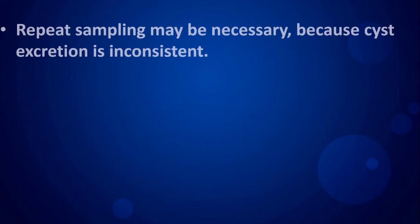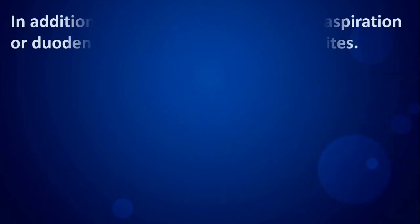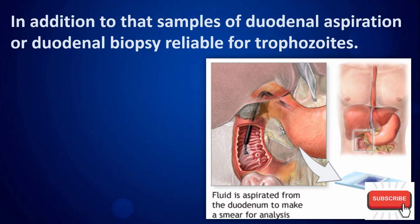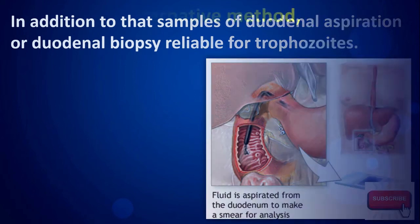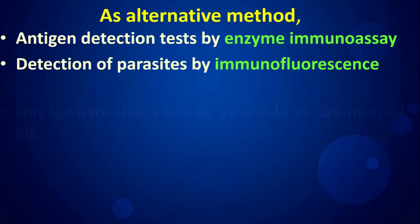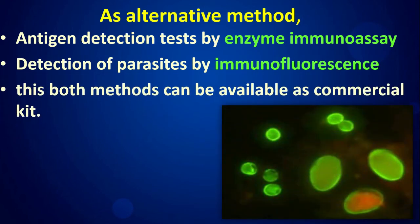Repeat sampling may be necessary because cyst excretion is inconsistent. Samples of duodenal aspiration or duodenal biopsy are also reliable for trophozoites. As alternative methods, antigen detection tests by enzyme immunoassay and detection of parasites by immunofluorescence are both available as commercial kits.